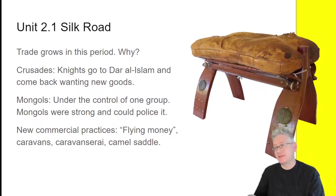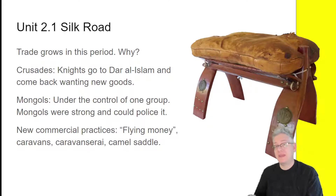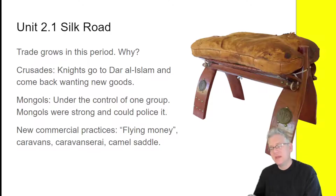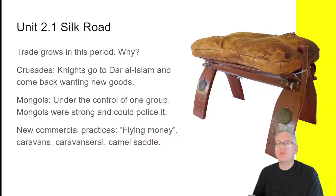There are also new commercial practices. One is the idea of 'flying money' — basically credit, known by the Chinese as flying money. A bank would issue a script that you could use at the next bank along the way to transport value from one place to another. Another thing is caravans — groups of people moving from one place to another. A camel caravan would transport trade goods from one city to the next, but you wouldn't go by yourself because that's dangerous — you'd go together with others in big, massive caravans. Another thing is called a caravanserai, which is kind of like a trade hotel.